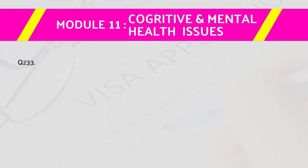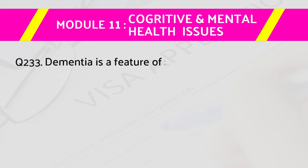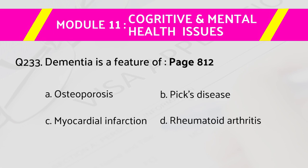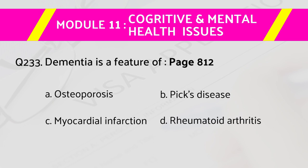Question number 234: Dementia is a feature of — page number 812. Answers are: a) osteoporosis, b) Pick's disease, c) myocardial infarction, d) rheumatoid arthritis. The right answer is b) Pick's disease.